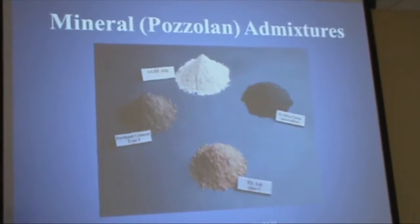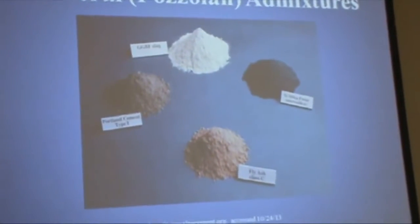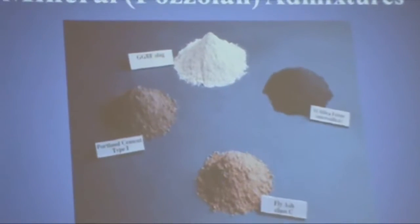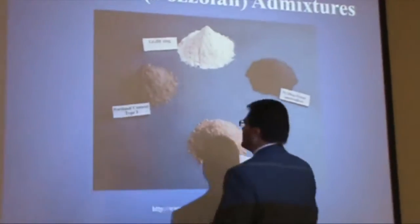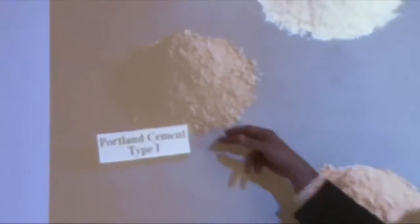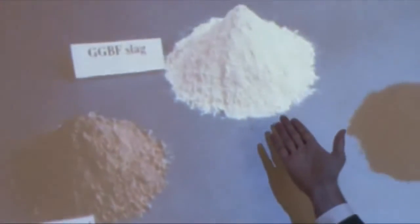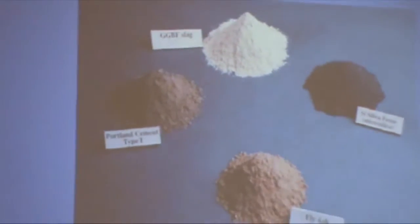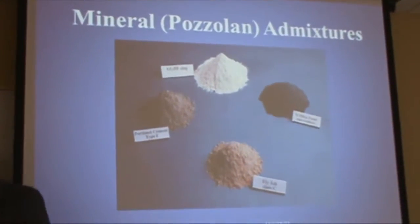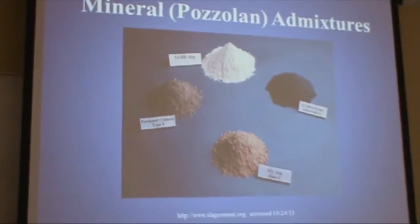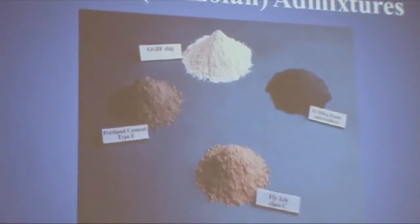There are also mineral admixtures — pozzolans. There are a number of different types, including Type 1 Portland cement, ground granulated blast-furnace slag, Class C fly ash, and silica fume — all mineral admixtures that can be added to concrete to enhance its properties. All three of these are byproducts from other industries that would go to a landfill if not used as mineral admixtures in concrete, making them a benefit to the environment as well.